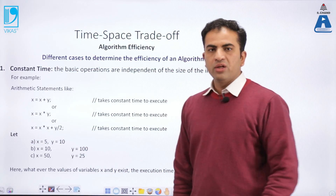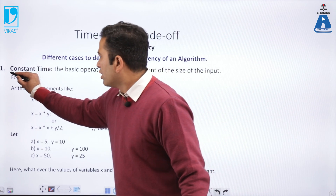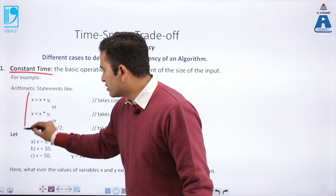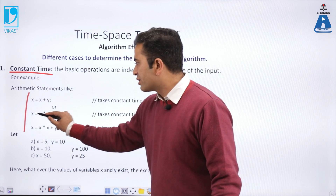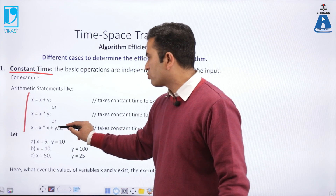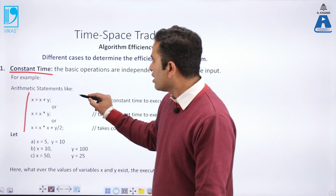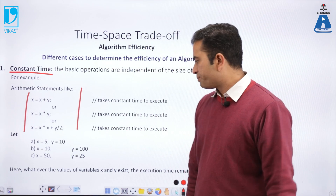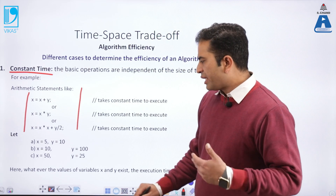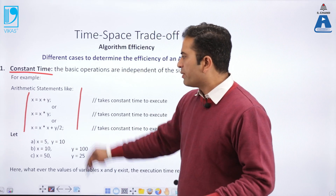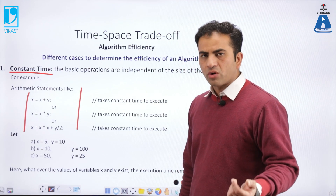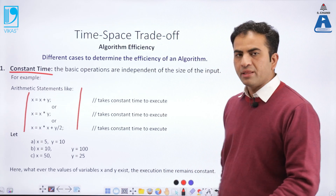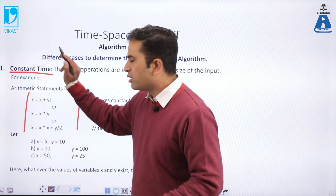How to calculate an algorithm's efficiency? First is constant time. Arithmetic statements like x = x + y, x = x * y, x = x * x + y / 2 — these are various arithmetic expressions and they take constant time. When we execute simple statements or simple arithmetic expressions, it takes constant time. Whatever the values of variables x and y exist, the execution time will remain constant. That is why it is called constant time.